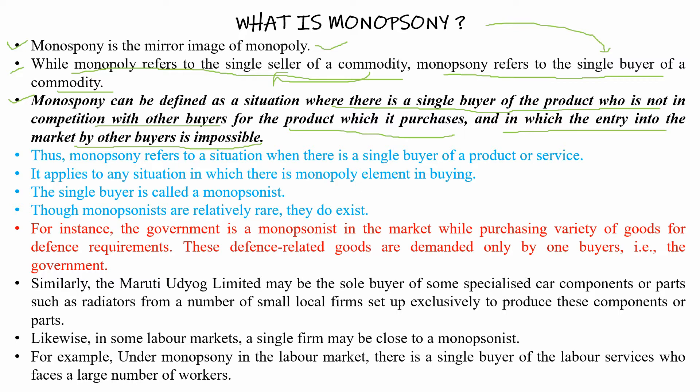For example, the government is buying fighter jets. The government is the only buyer of such defense equipment — no individual can purchase fighter jets. Even if someone invests, the government does not allow it. So there are no competing buyers for that particular product, and entry of new buyers into the market is impossible. This is the situation monopsony defines: a single buyer of a particular product where other buyers cannot enter the market.